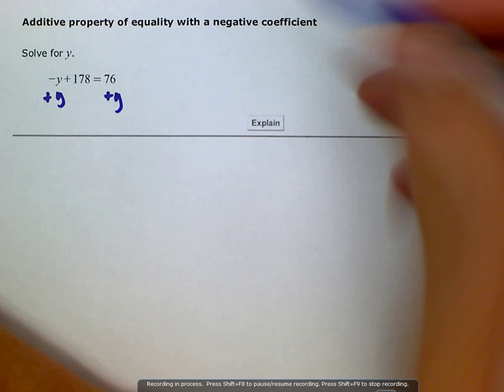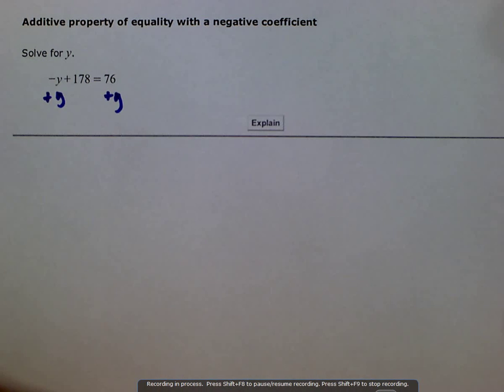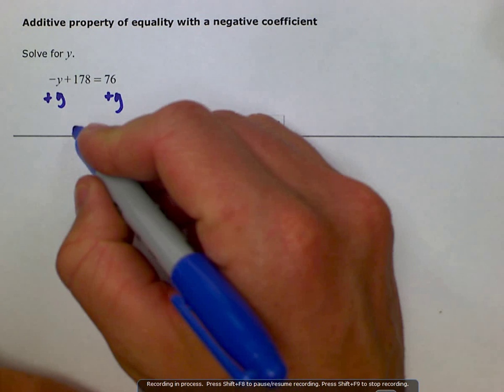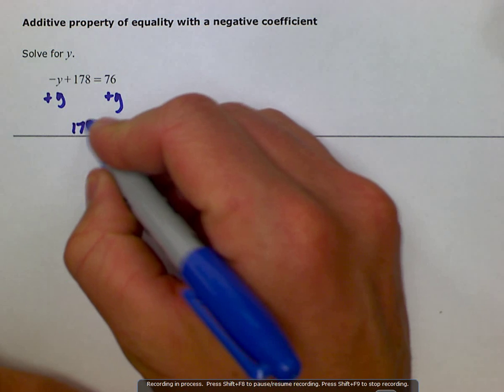It's the additive property of equality. What I add to one side, if I add it to the other as well of the equation, then we still maintain the numerical integrity of each side.